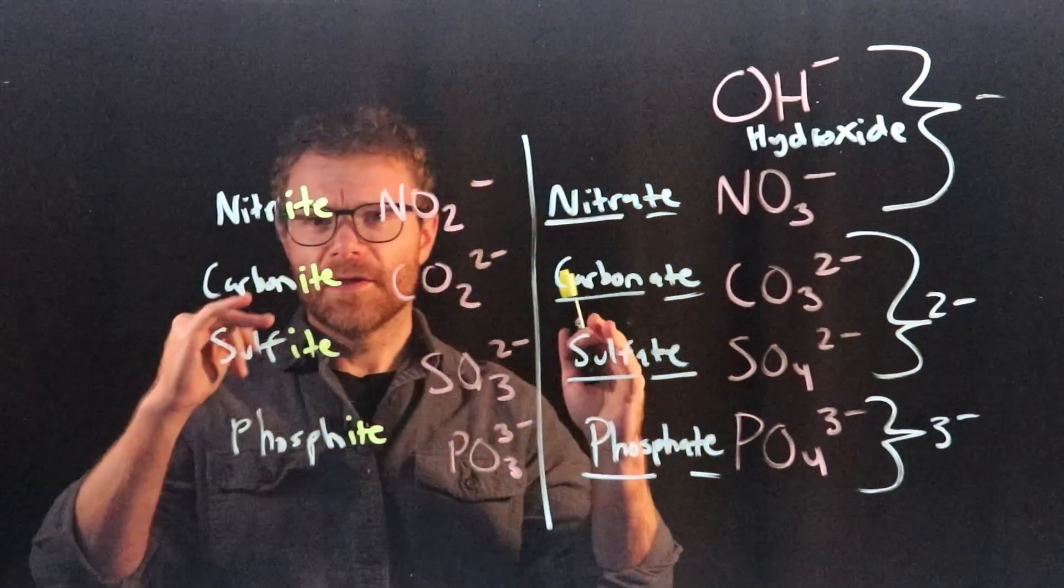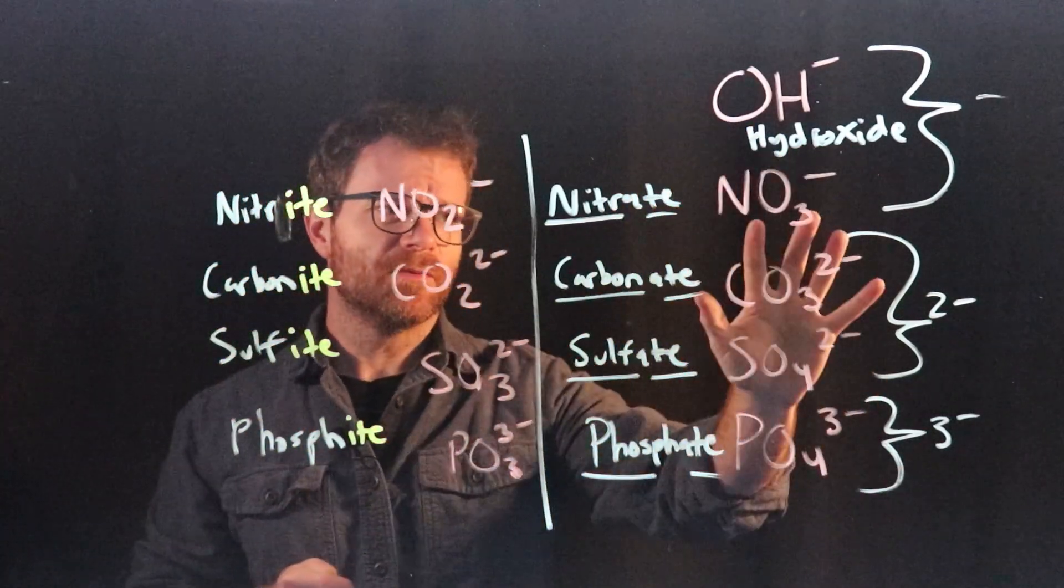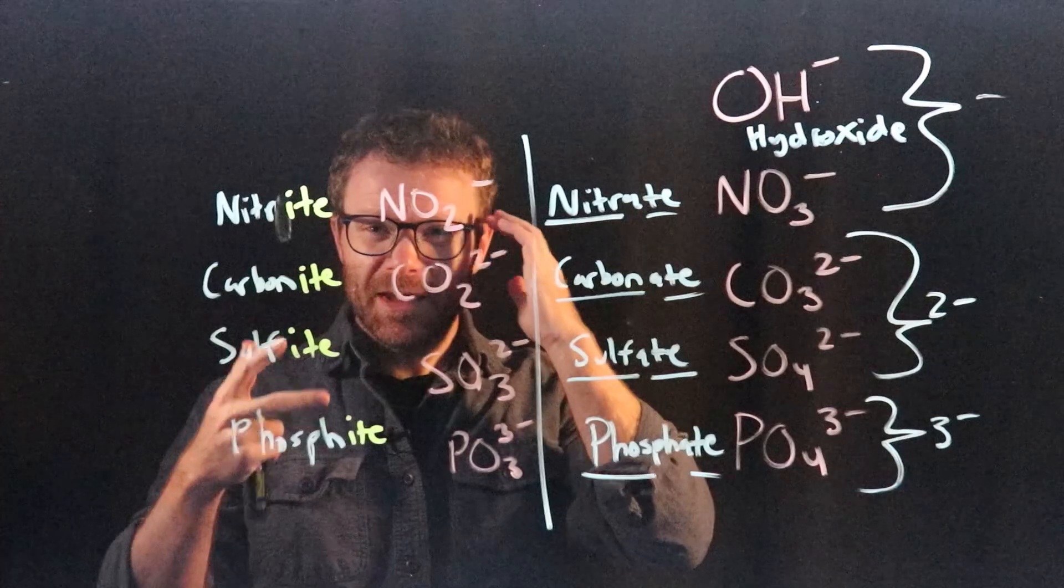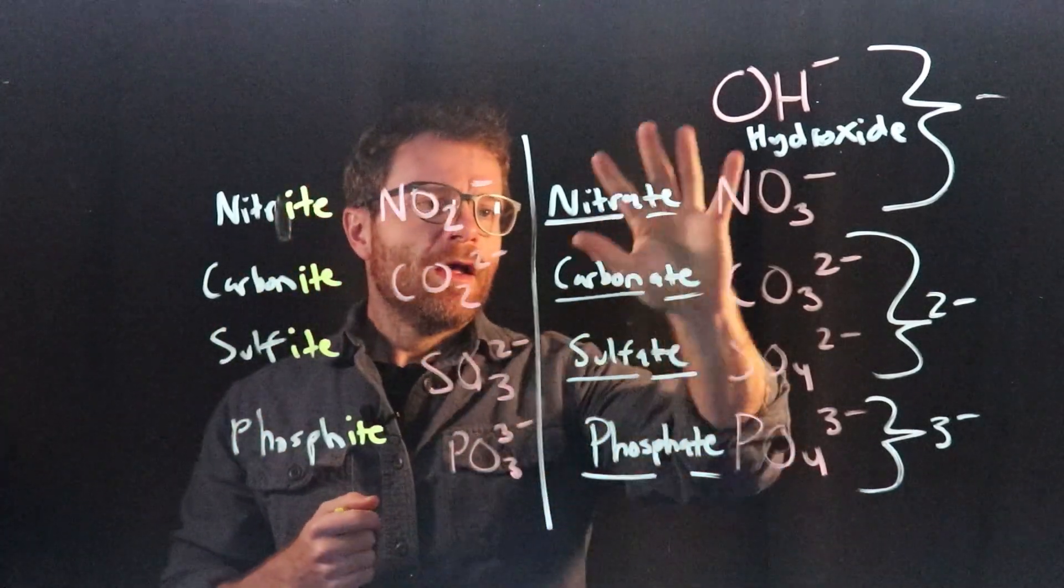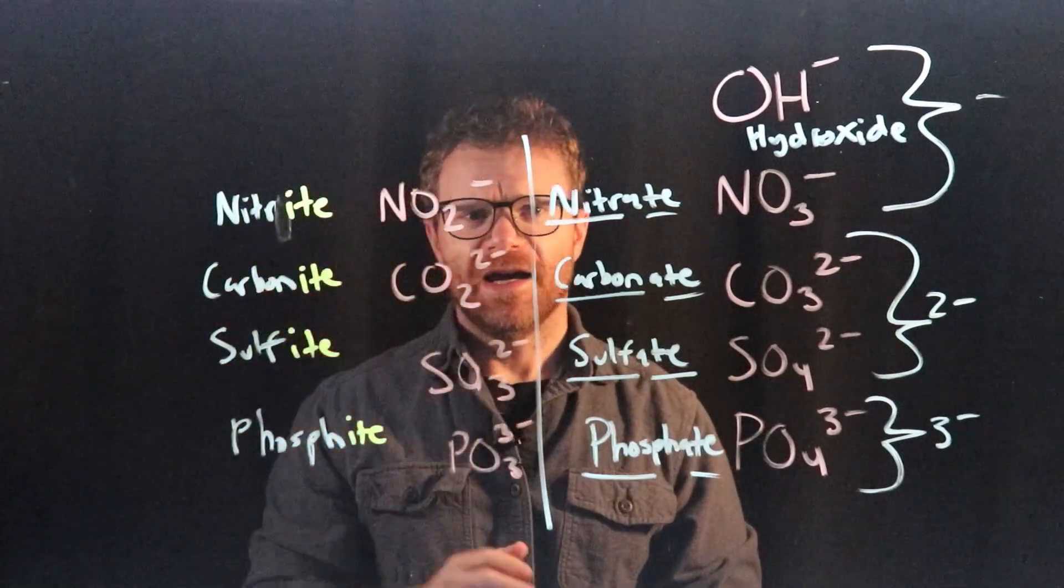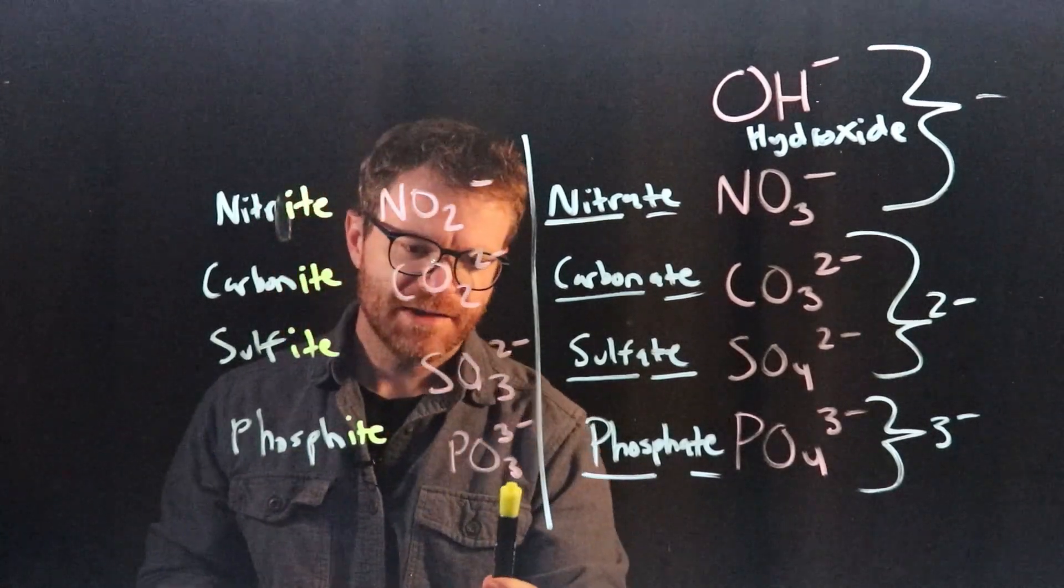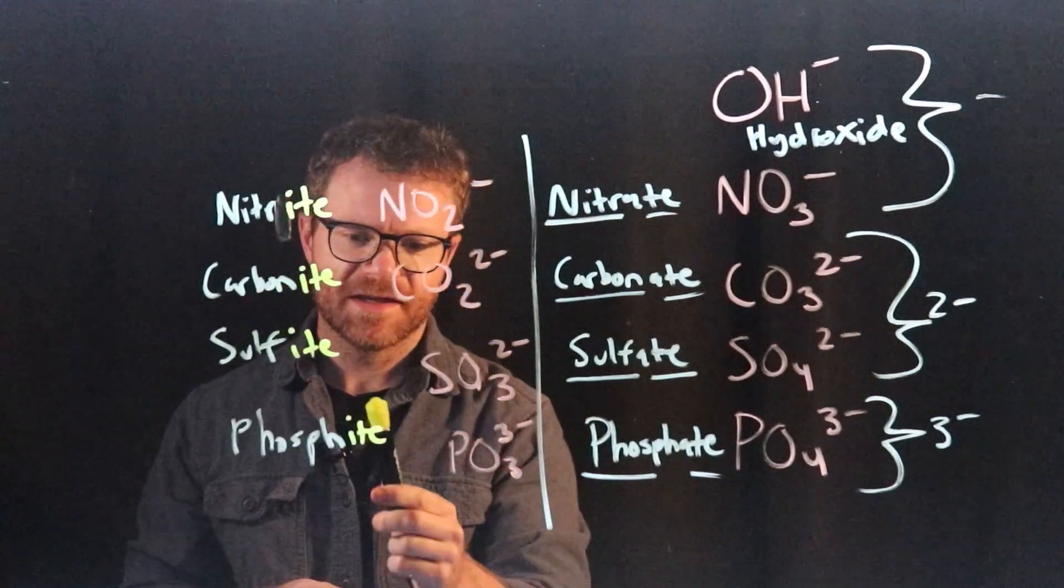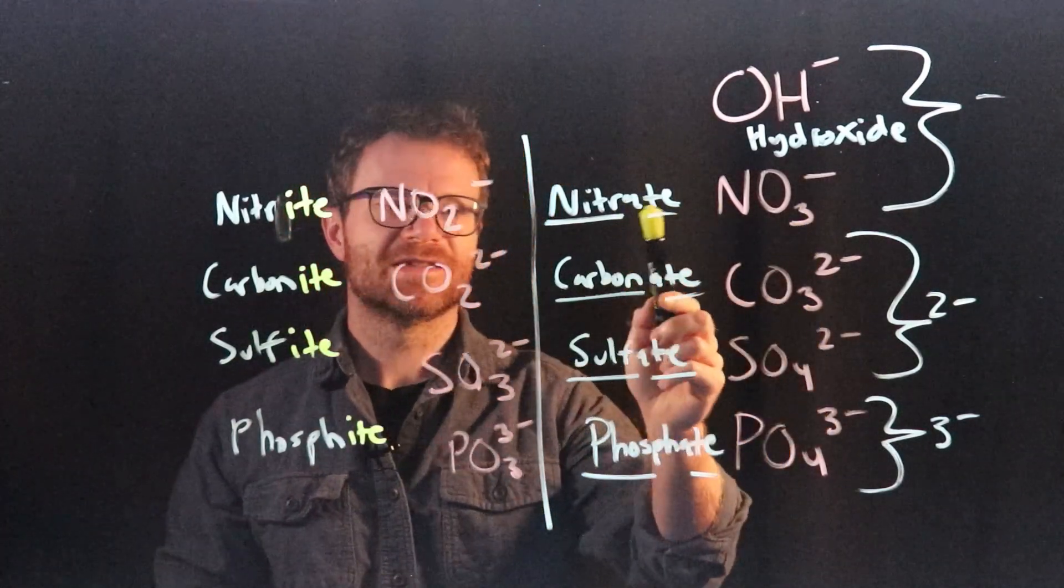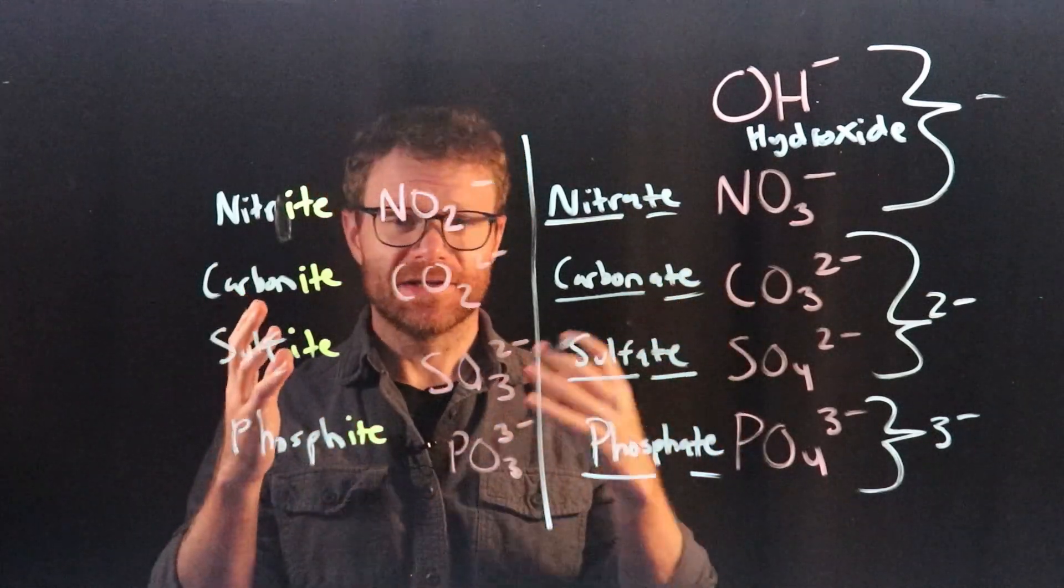And so the difference between these two groups of polyatomic ions is everything over here in this column has more oxygens than the things over here in this column. So when you're naming these groups of polyatomic ions, the thing that has more oxygens gets the -ate ending, and the thing with fewer oxygens gets the -ite ending. You can't just go by the absolute number of oxygens. Because here you see phosphite is a PO3, so three oxygens gets the -ite ending. And here you see nitrate, NO3, three oxygens gets the -ate ending. So three oxygens doesn't necessarily mean it's going to be -ite or -ate.